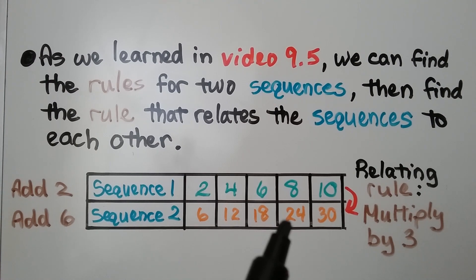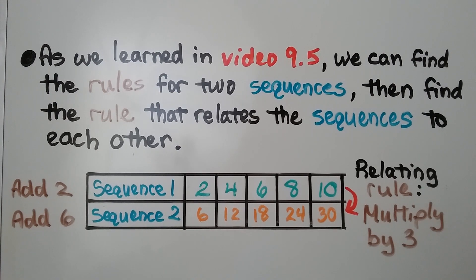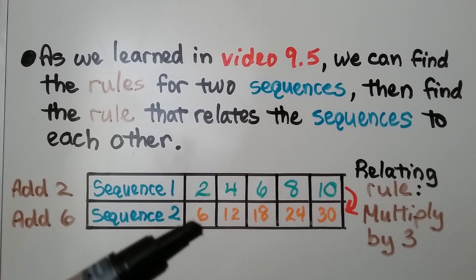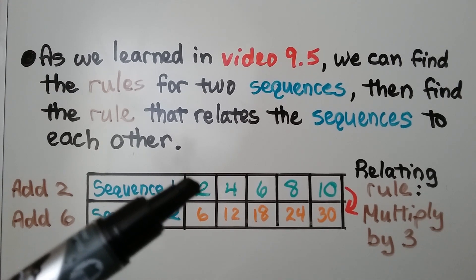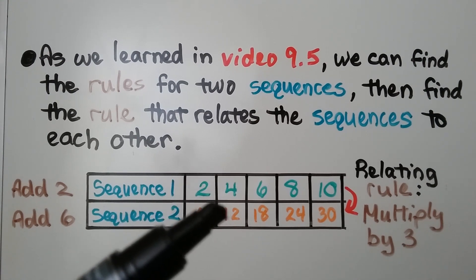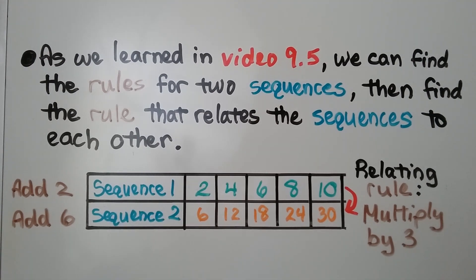Sequence 2 goes 6, 12, 18, 24, 30. We can continue this sequence if we keep adding 6. And the rule that relates sequence 1 to sequence 2 is multiply by 3: 2 multiplied by 3 is 6, 4 multiplied by 3 is 12, and so on.